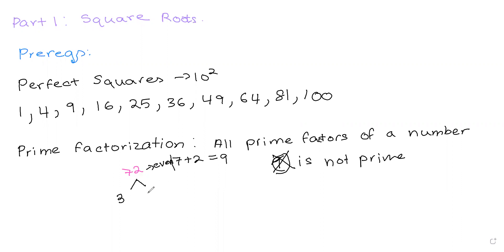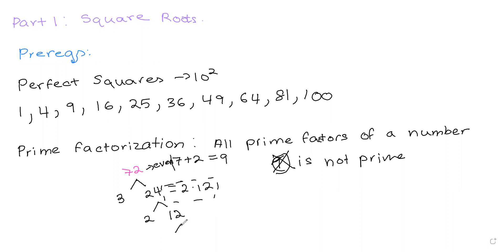Dividing 72 by 3 gives us 3 and 24. Now looking at 24, I know that 24 is equal to 2 times 12. Then looking at the factors of 12, I know that 12 is equal to 2 times 6. And 6 is equal to 2 times 3. Looking at all the numbers at the bottom, I can't reduce 2 or 3 any further into prime numbers, so I know I have finished my prime factorization.